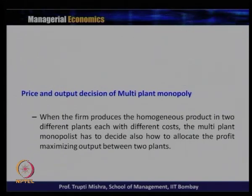The product is homogeneous — the same or identical product — produced in all the different plants, but each plant has a different cost function. They are not operating at the same cost level, which implies the per-unit cost is different across plants. So the question is how price and output determination is generally done in the case of a multi-plant monopolist.